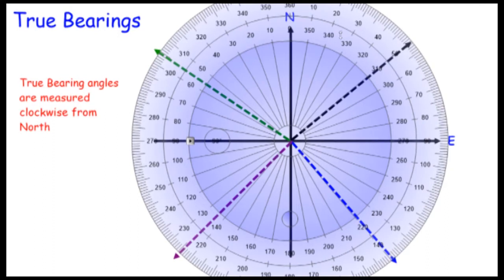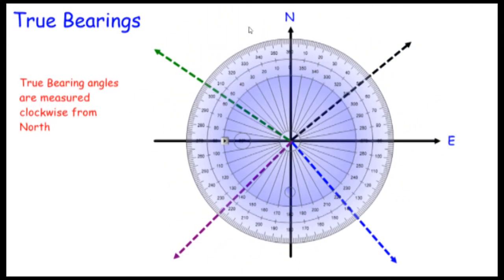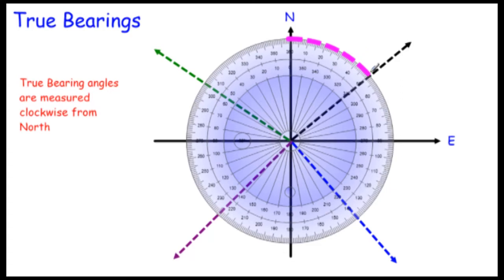Let's bring the protractor in. You can see the angles measured around the outside. We're working with these bearing lines — the black, blue, purple, and green lines. Measuring around, you can see that's 50 degrees from true north, so that bearing is 050 — three digits are usually associated with a true bearing.